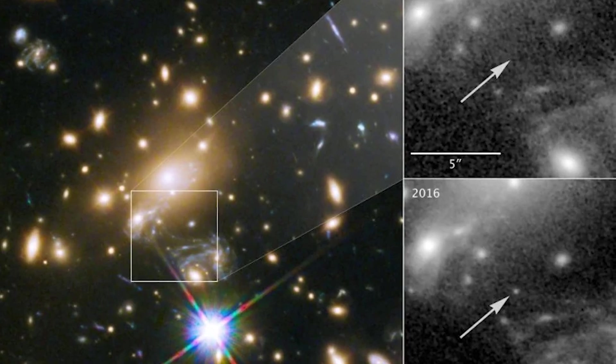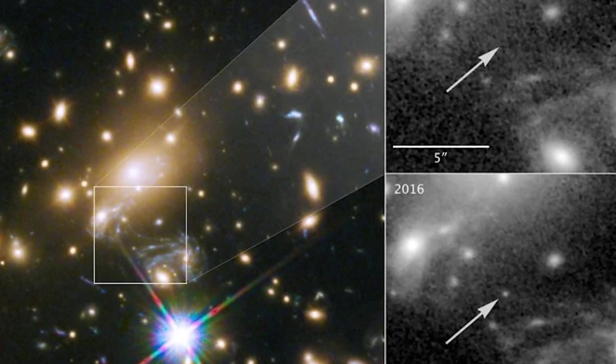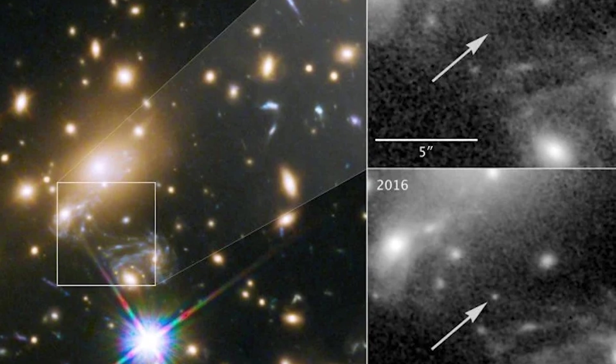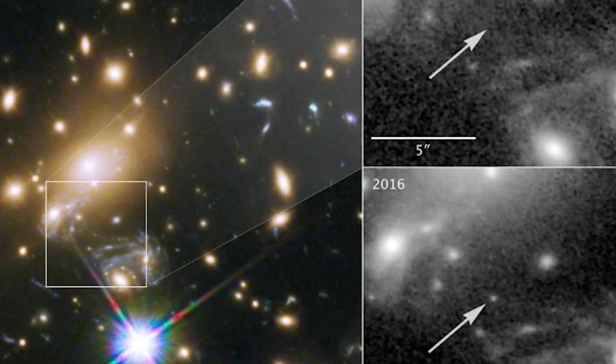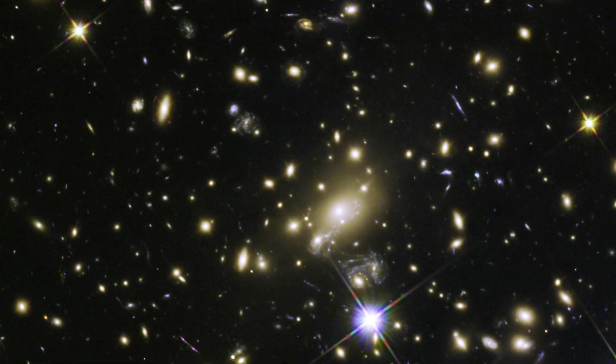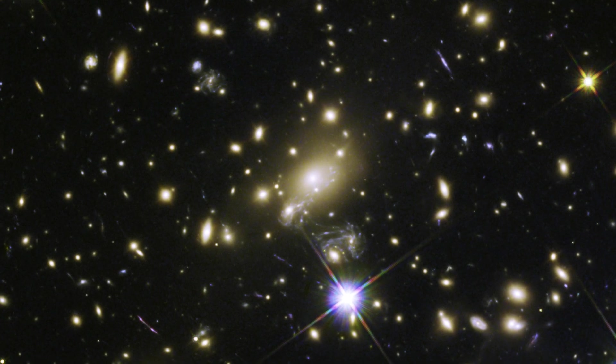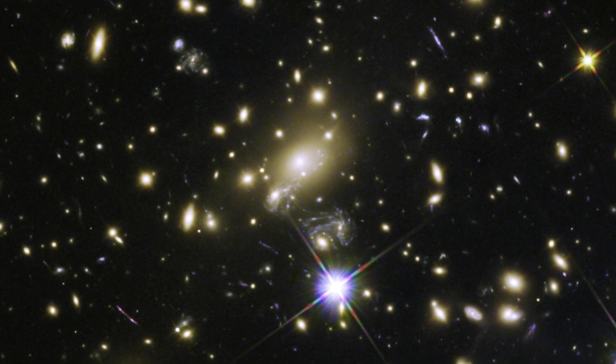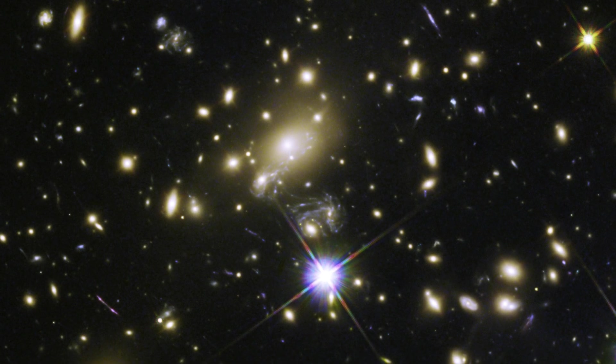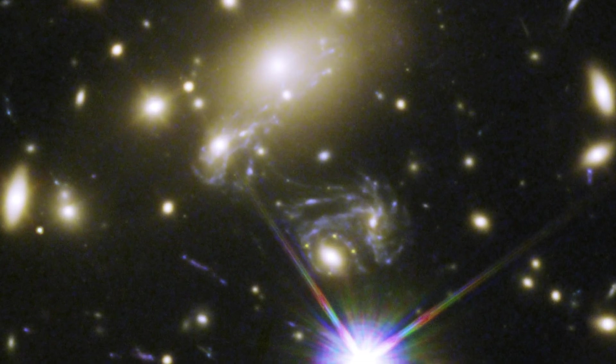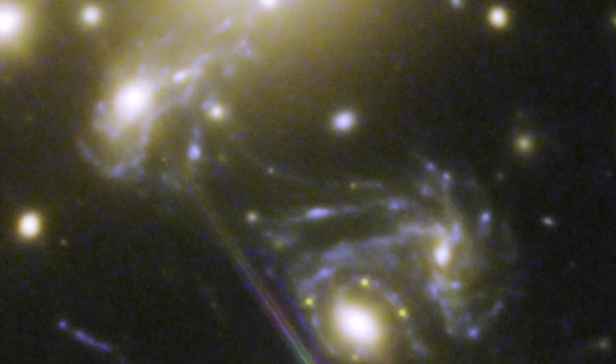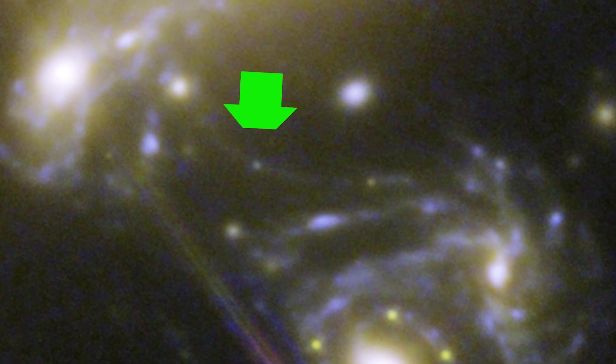Icarus, a blue supergiant in a spiral galaxy with a redshift of Z equals 1.49, was the first instance of a highly magnified star. The star was located in the field of view of the Max J1149.5 plus 2223 galaxy cluster, taken by NASA's Hubble Space Telescope. The background star's amplification increased by a factor of around 3 to 2,000 due to microlensing by a foreground object in the lens.